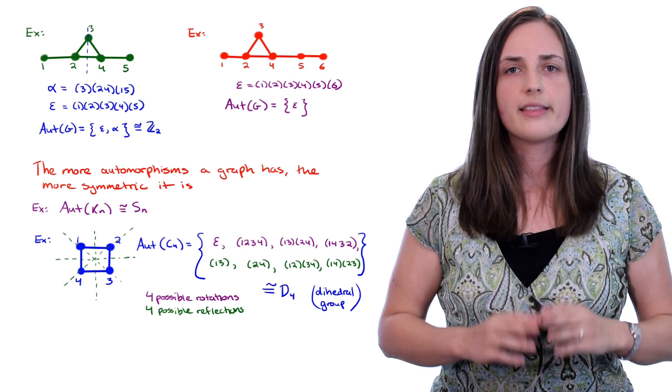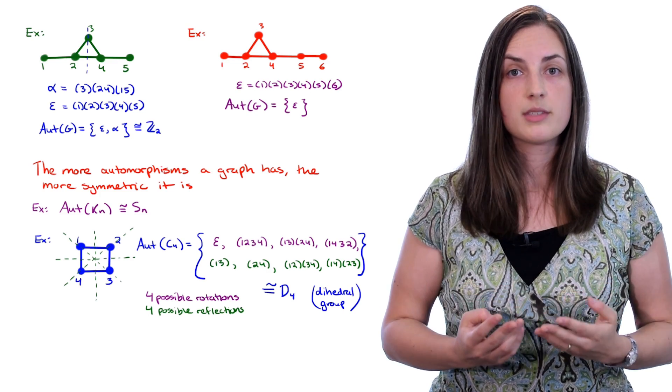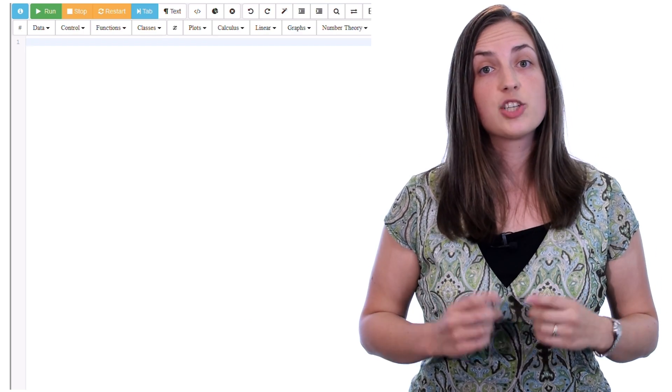Now if you don't know a lot about group theory, that's okay. The important thing to keep in mind is that the more automorphisms a graph has, the more symmetric it is. Now that we've had some practice finding the automorphisms of a graph by hand, I want to show you how to do this using SAGE. Here I am inside of SAGE, and I'm using SAGE in their SAGE math cloud.